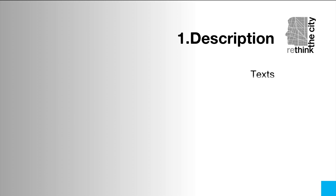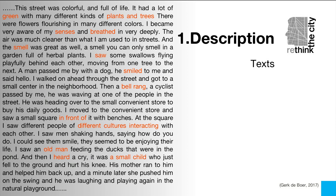In the descriptive phase, first of all, you can try to use text — the most familiar tool to express oneself and describe a space. For instance, this is a piece of text written by a student from TU Delft describing a place in his dream: 'The street was colorful and full of life. It had a lot of green, plants, and trees, aware of my senses' breath.' From this text, we could see that he already set up his focus and interest in the built environment.